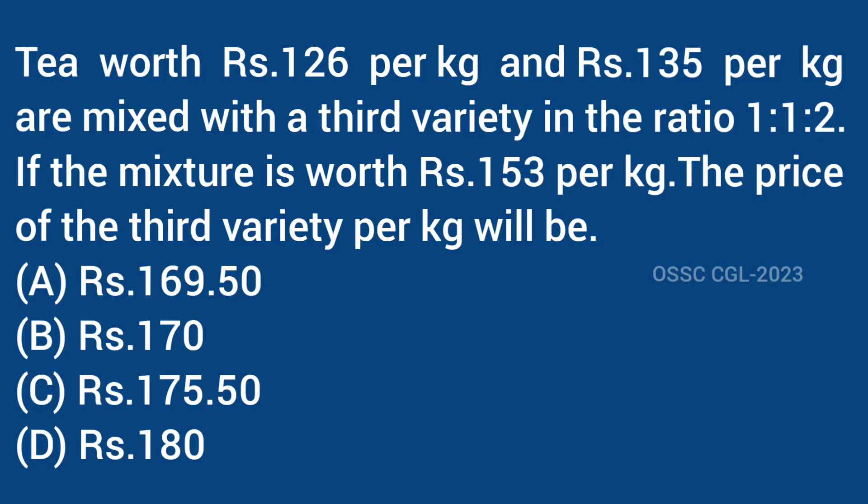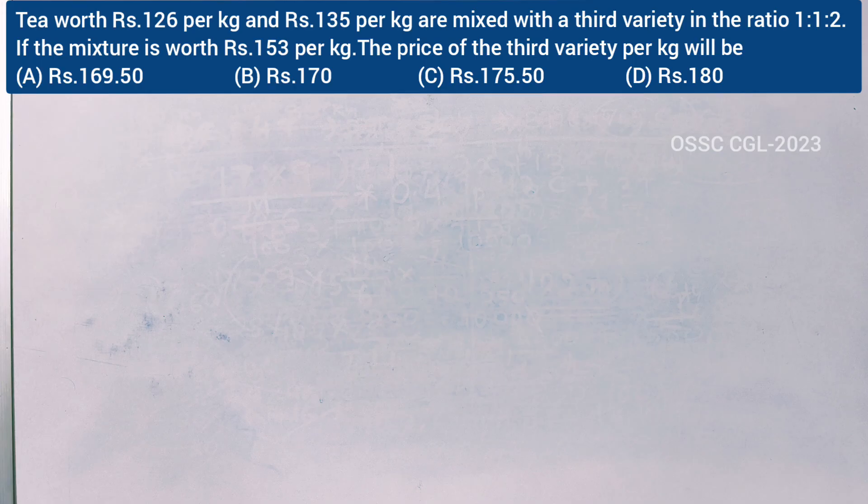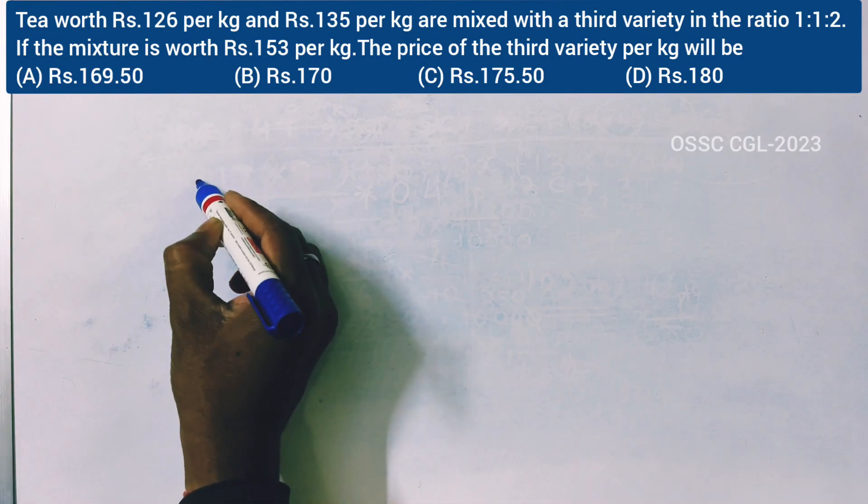Tea worth Rs. 126 per kg and Rs. 135 per kg are mixed with a third variety in the ratio 1:1:2. If the mixture is worth Rs. 153 per kg, the price of the third variety per kg will be?